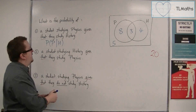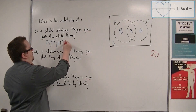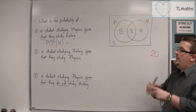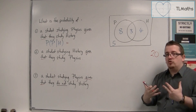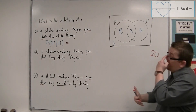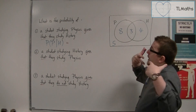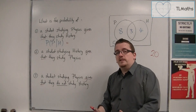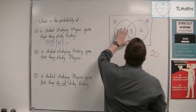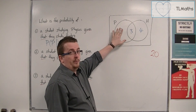Now, in practice, how to actually find this: if we're told that we know that they study history — so we've been given this extra bit of information that they study history — what's the probability of choosing a student that studies physics? If we know that they study history, then we know that it's only down to seven possible students.